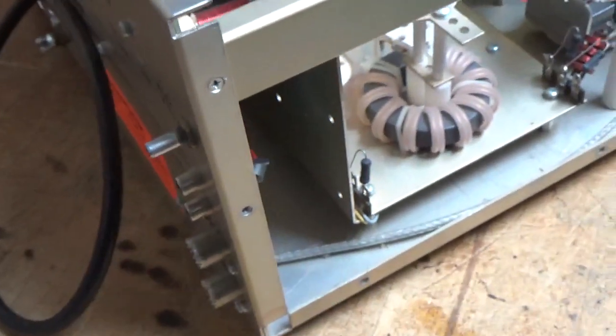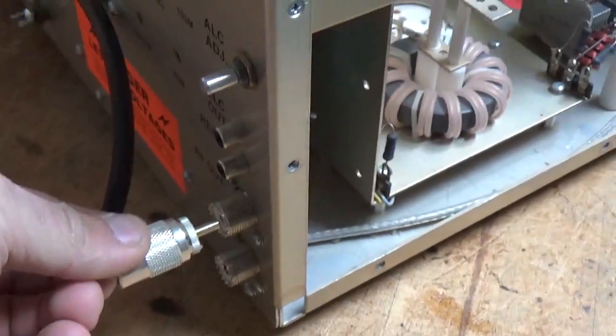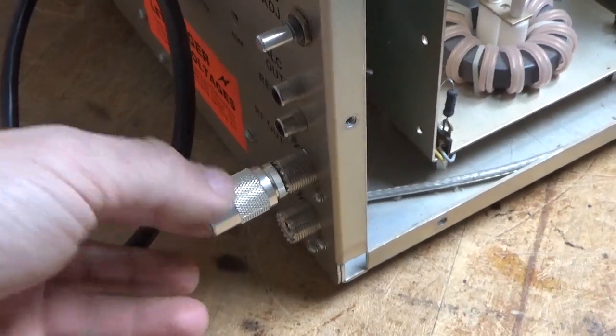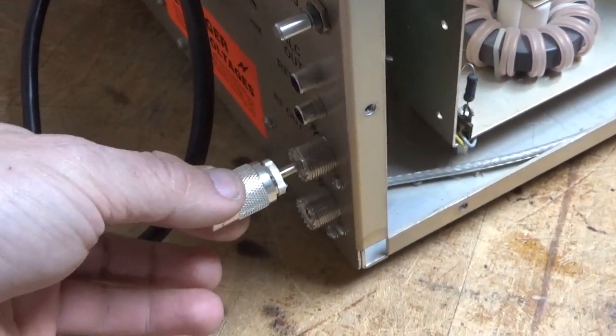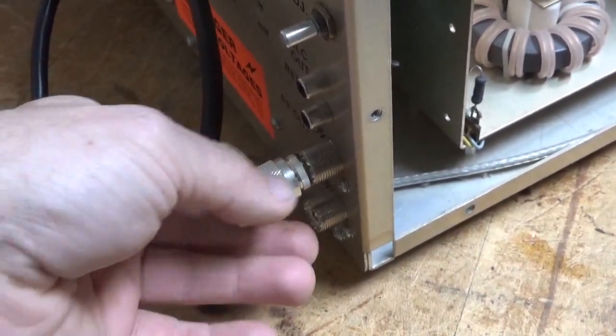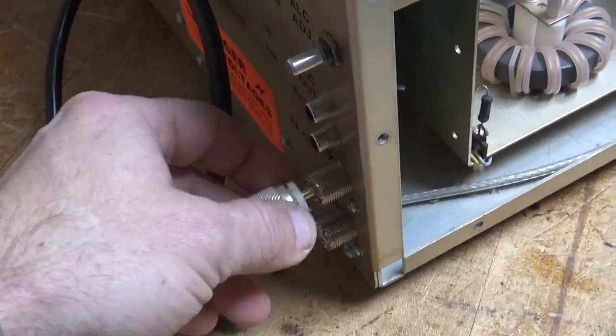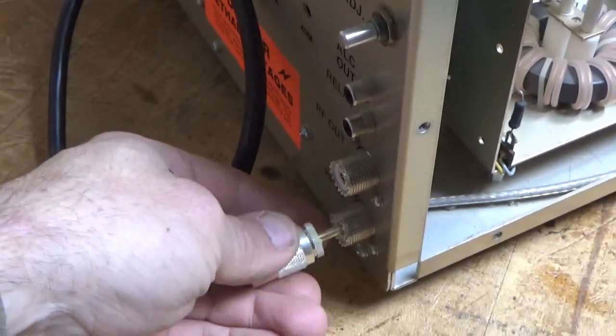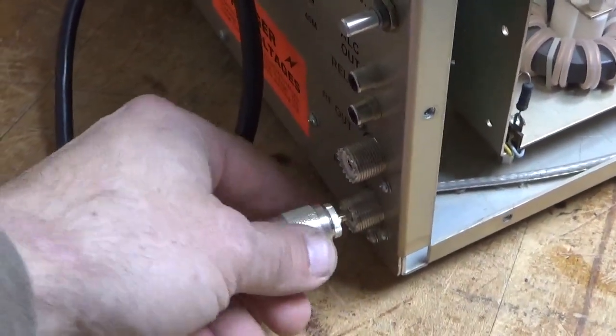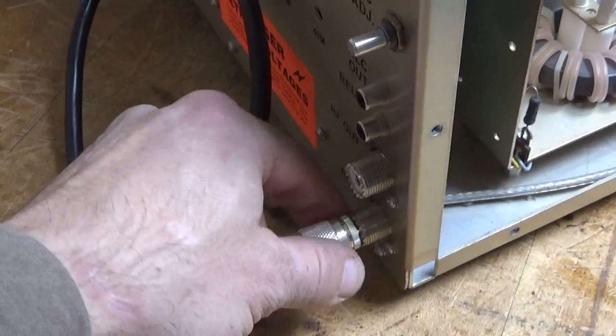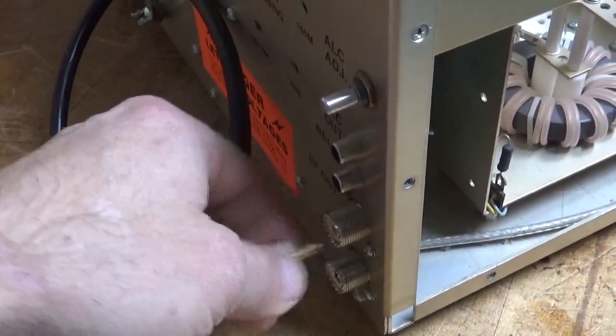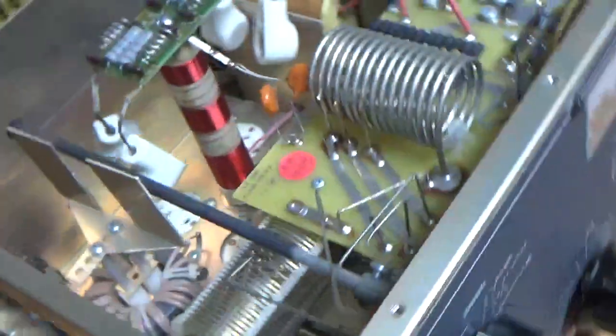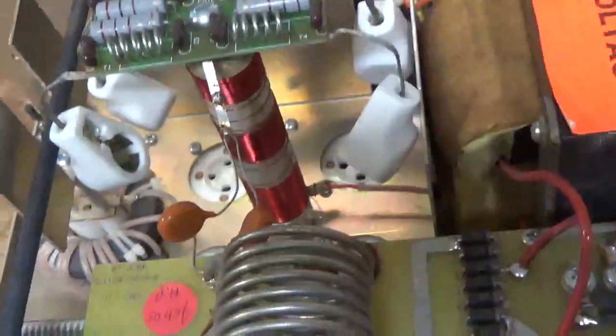I always check the SO239 connectors. Look at this. No connection. Super sloppy. That's the output. Input. Not as bad, but still bad. You don't ever want to put any RF amplifier, whether it's solid state or tube, into an open. Bad stuff happens.